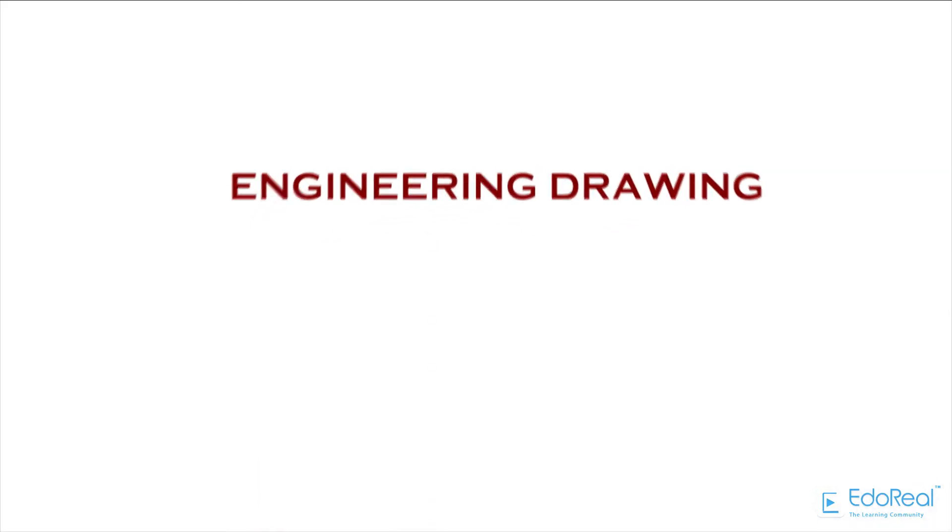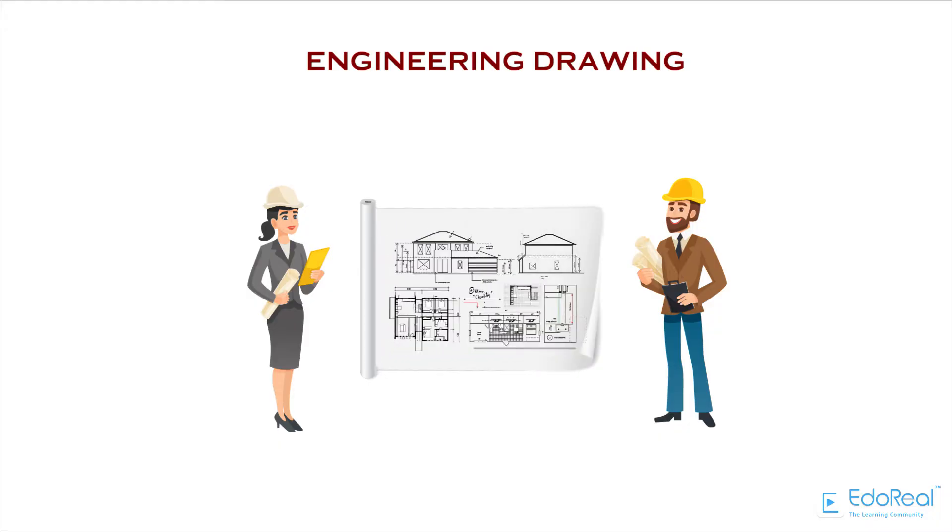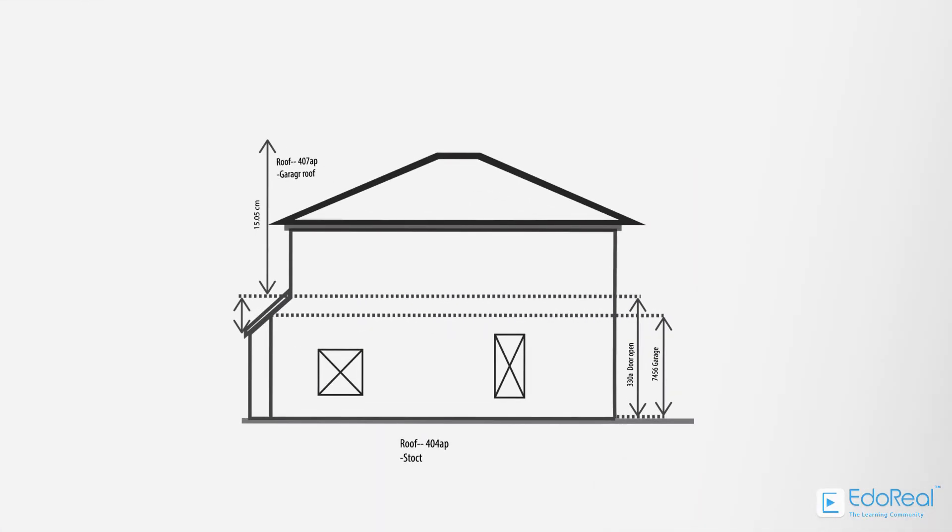Engineering Drawing. An engineering drawing is a type of technical drawing used to fully and clearly define requirements and capture all the geometric features of a product, such as dimensions, for engineering products.